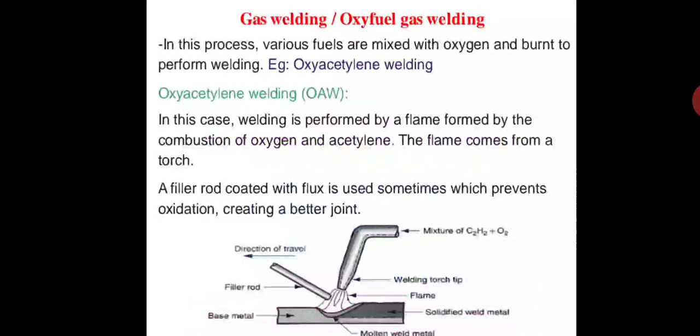Gas welding is the process where various fuels are mixed with oxygen and burned to perform welding. The most common is the oxyacetylene gas welding, which uses gases to weld or cut metals. It was developed in 1903 by the French engineers. In oxyacetylene gas welding, the welding is performed by a flame formed by the combustion of oxygen and acetylene.